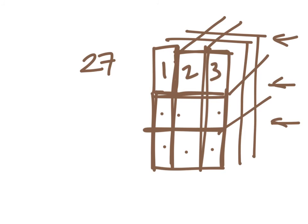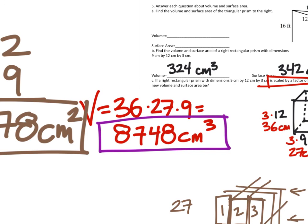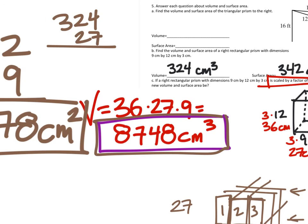So in other words, there's 27 times what the original volume was, and the original volume is 324. So we're just going to multiply that by 27. 324 times 27, and that's what we get, what we originally found for the volume anyways.